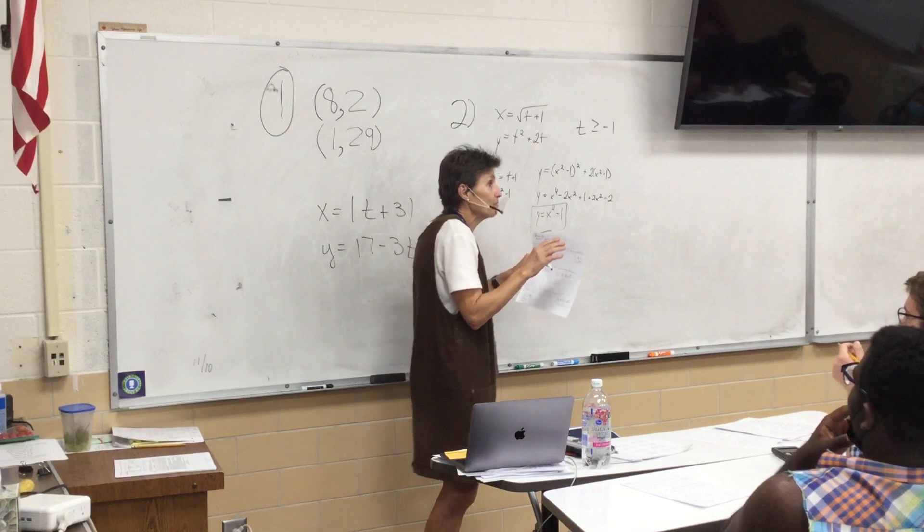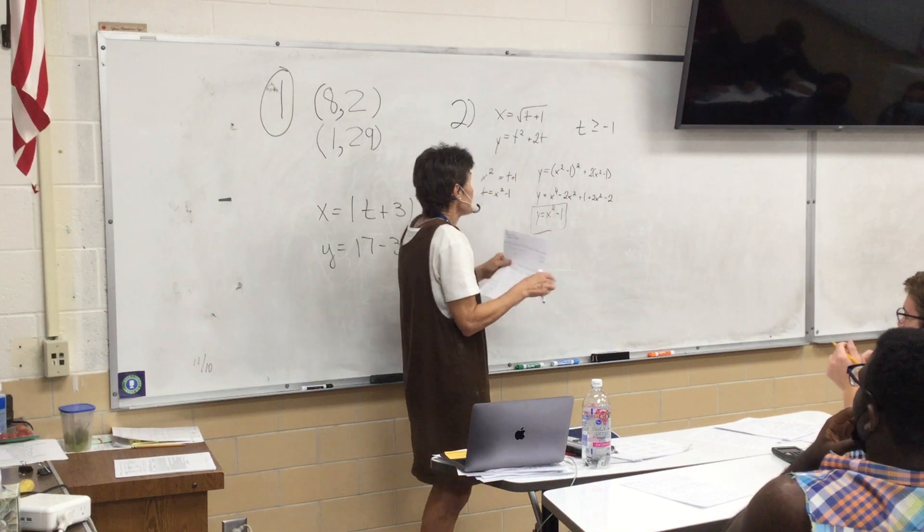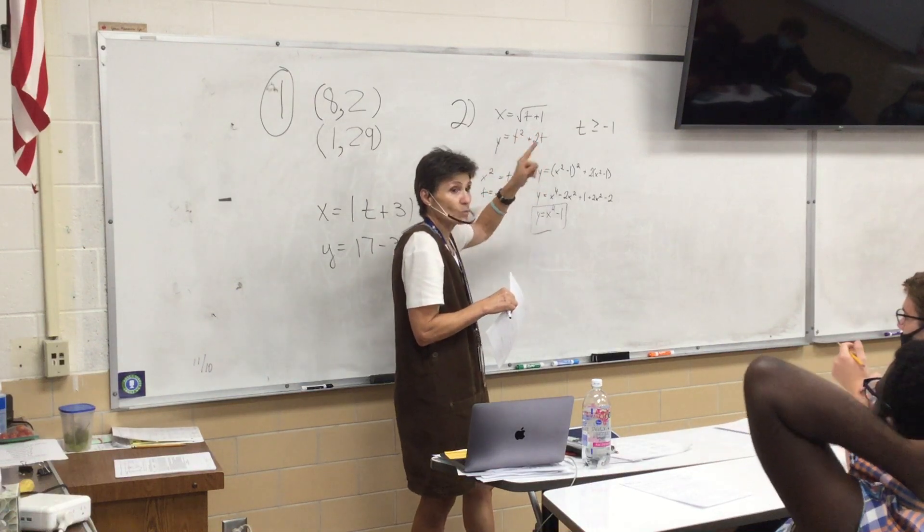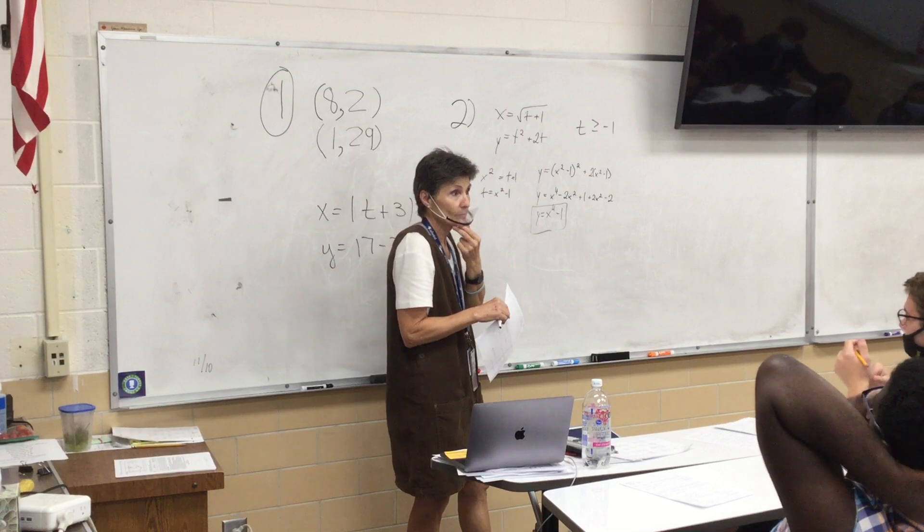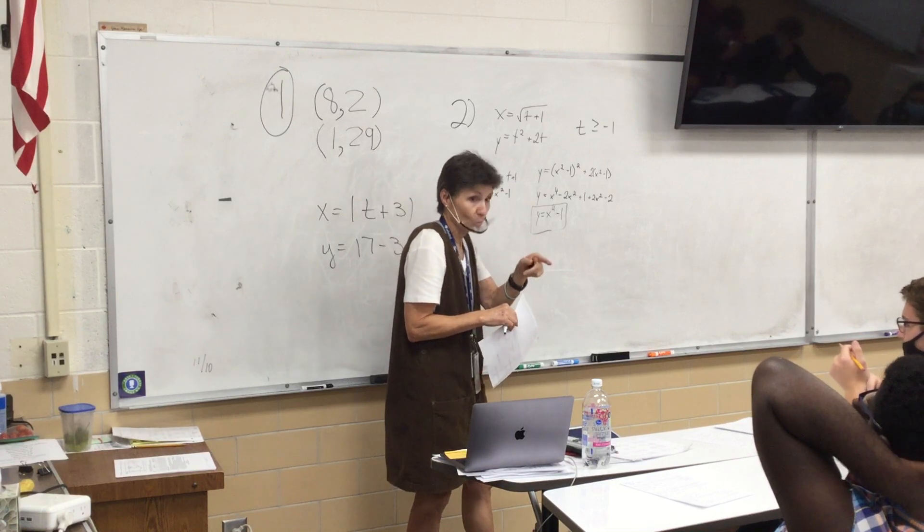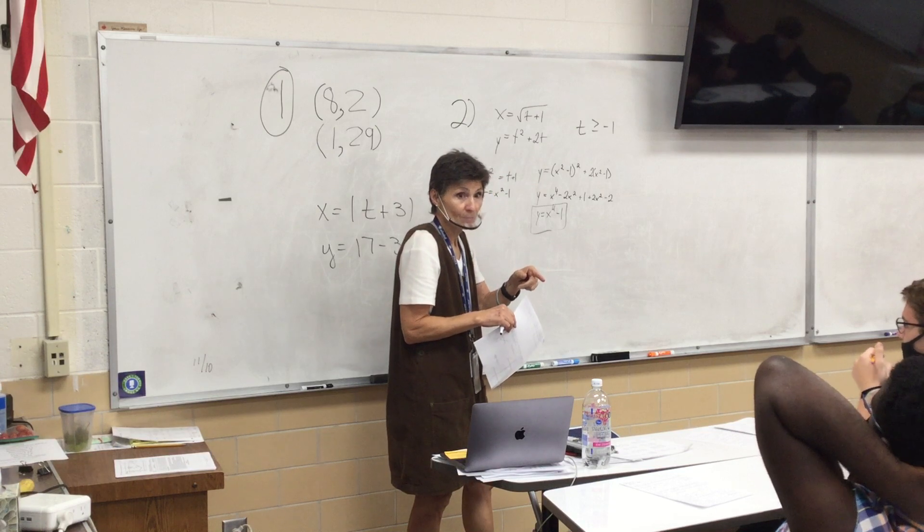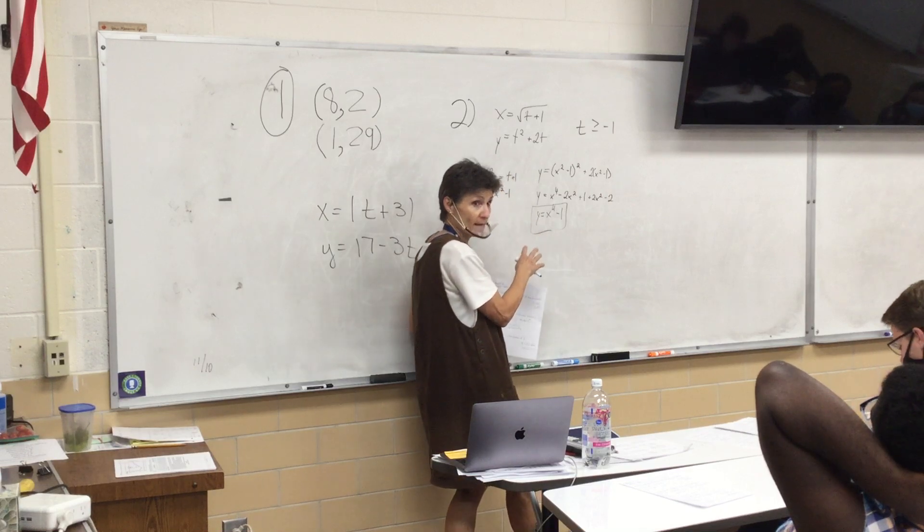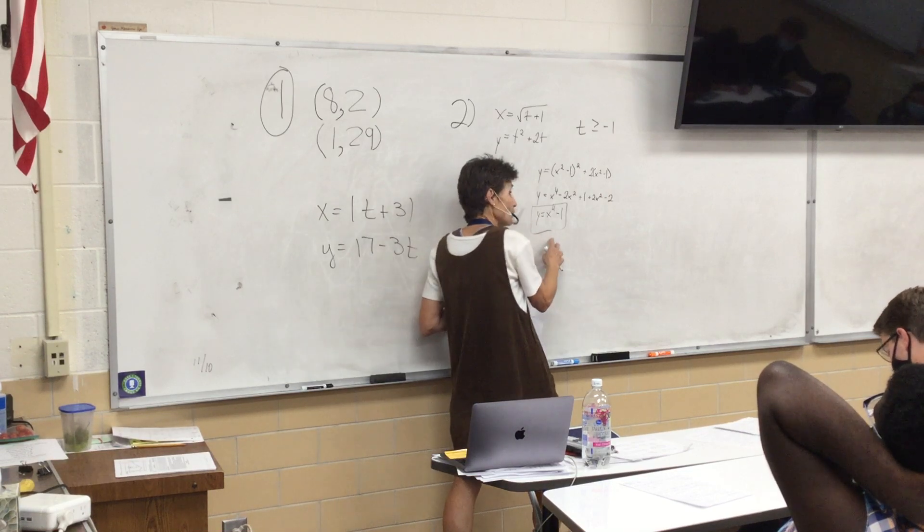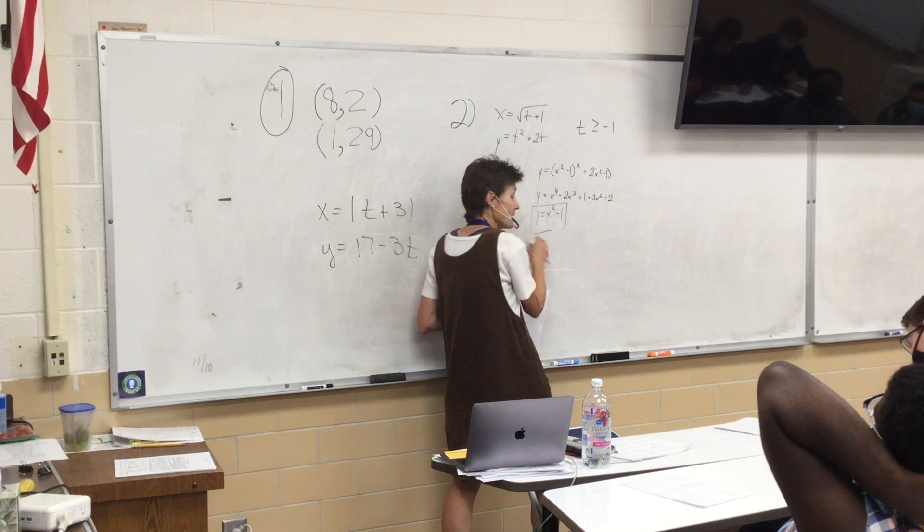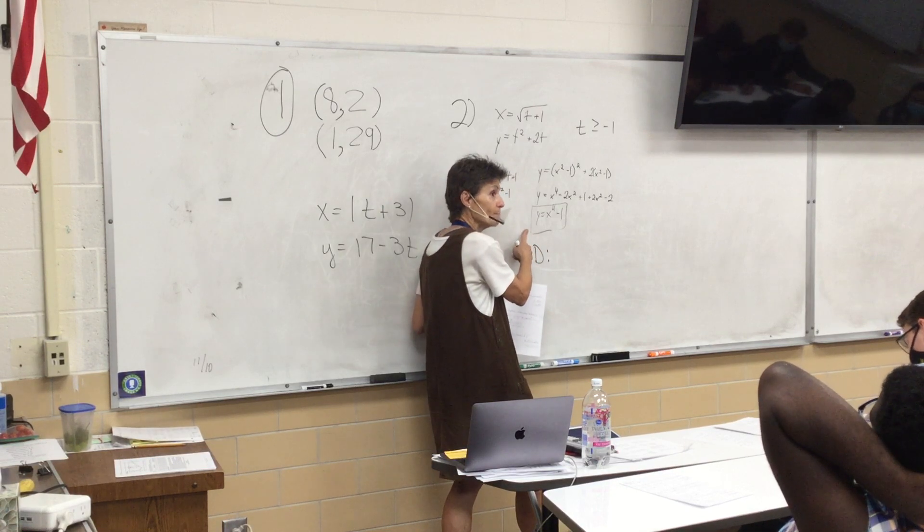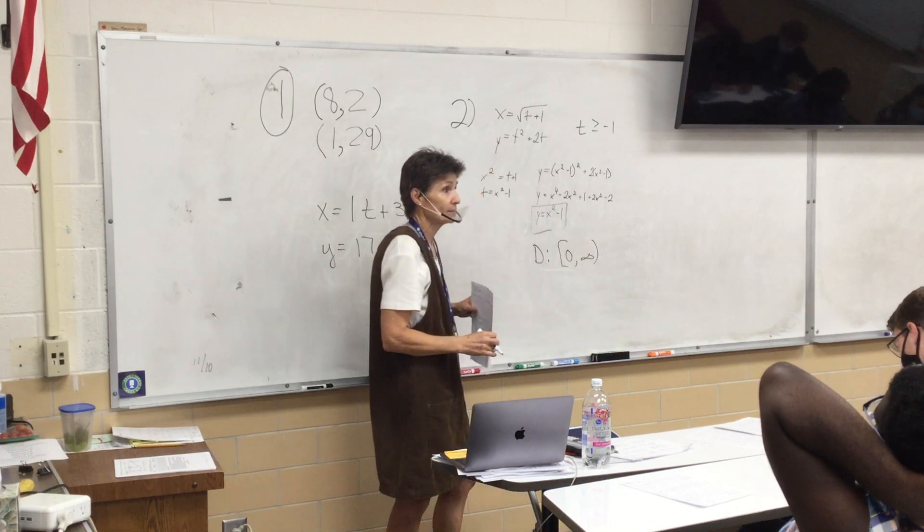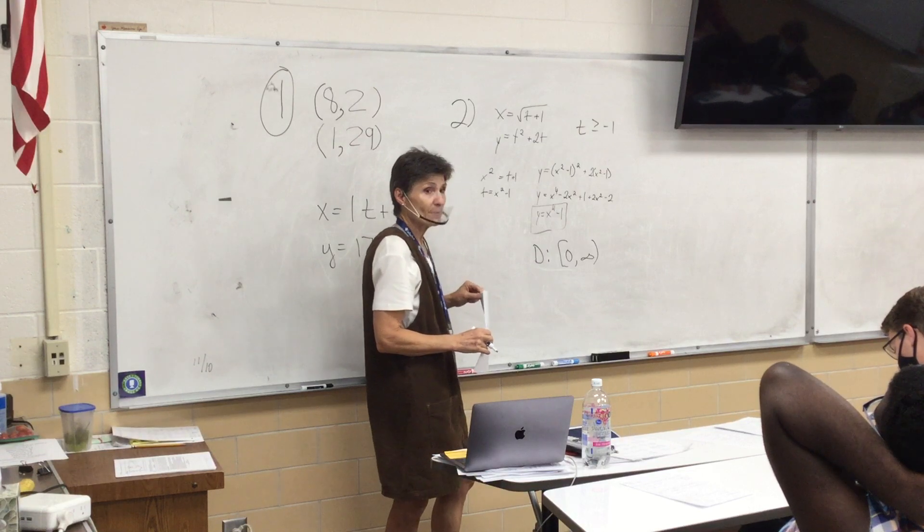Okay. So, what does that mean for X? If T has to be bigger than or equal to negative 1, then what's going to happen to my X value? It's going to be bigger than or equal to 0. Does that make sense to you?